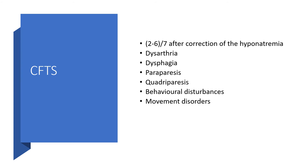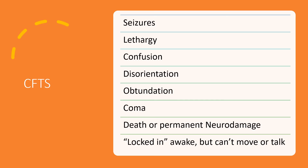In extrapontine features, we might be dealing with psychiatric disturbances, catatonia, postural limb tremor, myoclonic jerks, Parkinsonian-like presentation, choreoathetosis, and dystonia — all of which may respond to dopaminergic agents. Two to six days after correction of the hyponatremia, we can be faced with dysarthria, dysphagia, paraparesis, quadriparesis, behavioral disturbances, and movement disorders. We could also face seizures, lethargy, confusion, disorientation, obtundation, coma, death, or permanent neurological damage. The patient could be left in a locked-in state — meaning awake but unable to move or talk.